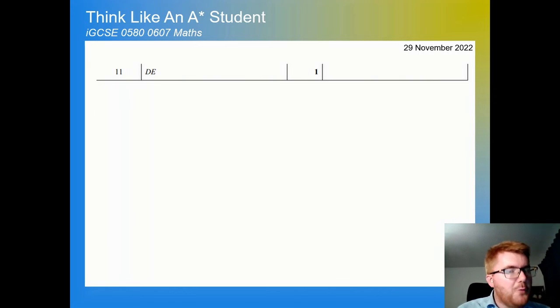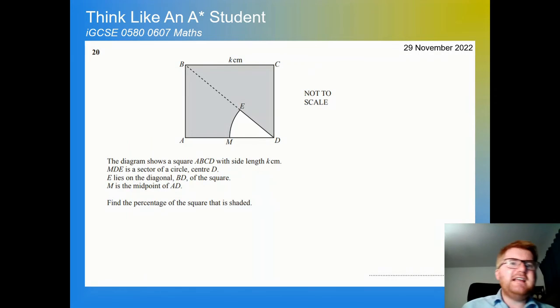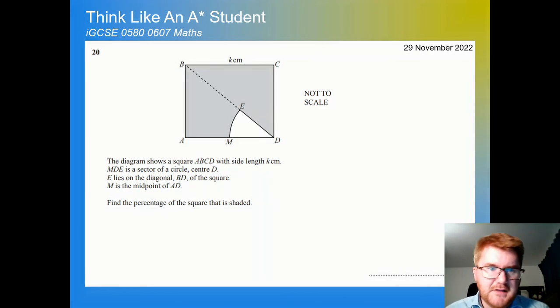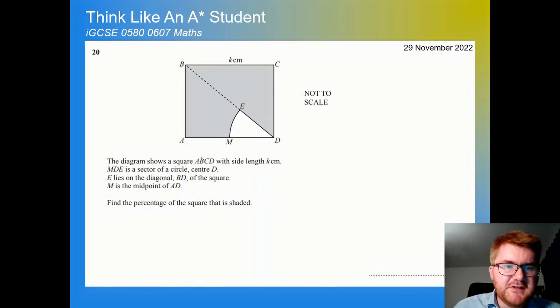So rather than focusing, D is the answer, I move on, look at how I thought about that. I recognized what kind of question it is, circle theorems. Then I thought about diameter, what do I know about diameter and circle theorems? I drew down the appropriate circle theorem and then kind of worked backwards retrospectively to identify which triangle here is important.